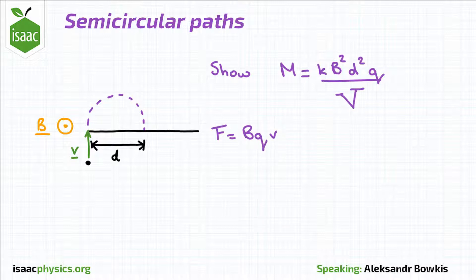the force acting on the particle is given by bqv. Since it moves in a circle, this can also be written as the centripetal force, f equals mv squared divided by r, where r is the radius of the circular path.